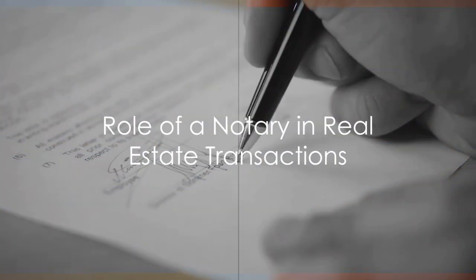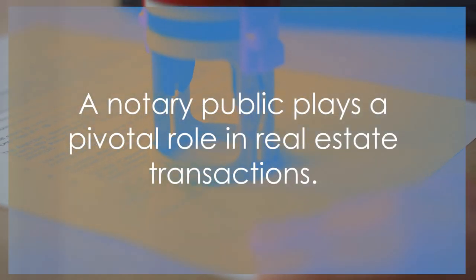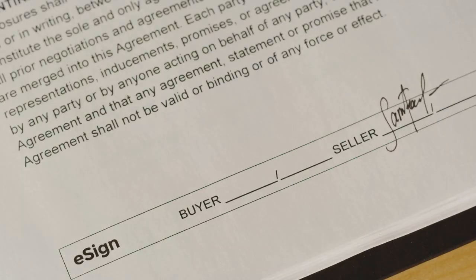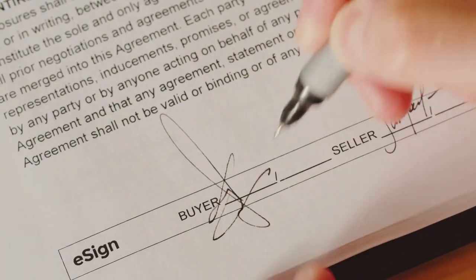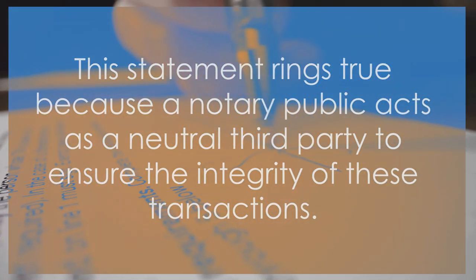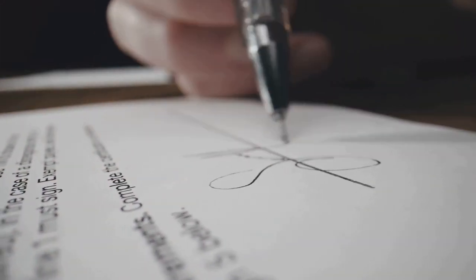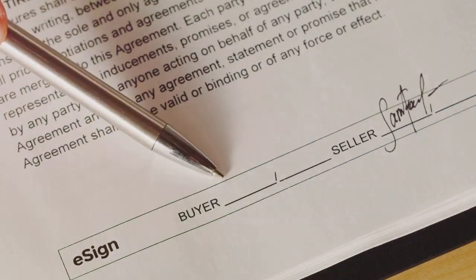A notary public plays a pivotal role in real estate transactions. This statement rings true because a notary public acts as a neutral third party to ensure the integrity of these transactions. So, what exactly does a notary public do? Let's break it down. First and foremost, a notary public verifies the identity of the parties involved. This is a crucial step, as it prevents fraud and ensures that the individuals signing the documents are who they say they are.